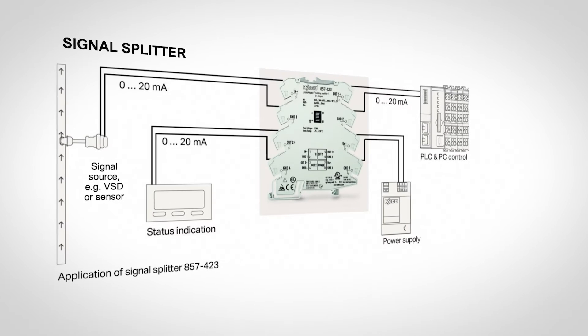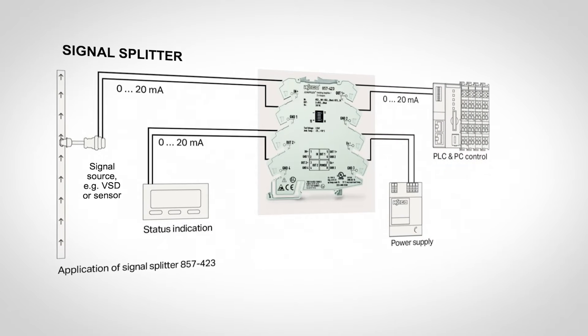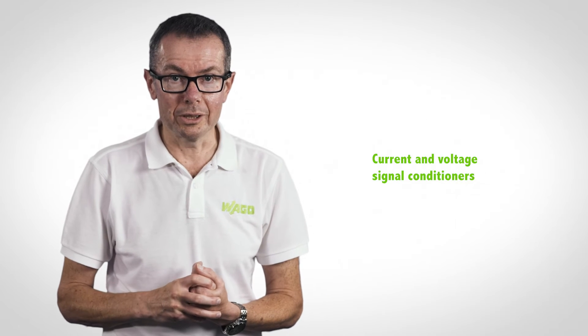Signal splitters: these do exactly what they say. For example, should it be necessary to send a 0 to 10 volt or 4 to 20 milliamp analog signal from a variable speed drive to both a PLC and an HMI simultaneously, a signal splitter can be used. It has the added benefit that all three pieces of equipment are electrically isolated.